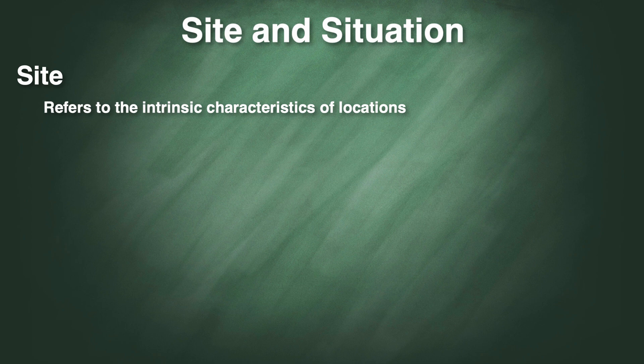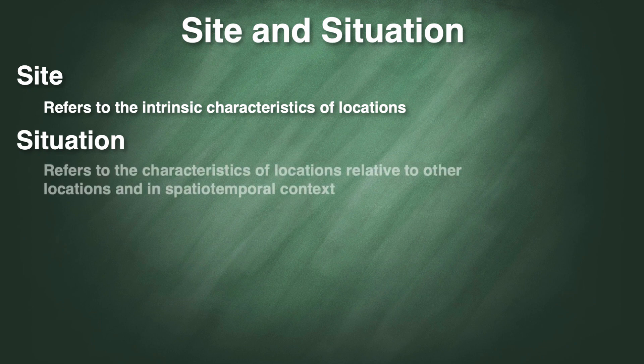In contrast, situation refers to the characteristics of a place relative to something else. It includes taking context into account, including both spatial and temporal context. A location may be a border region on the edge of an empire. Maybe its position on the coast makes it a natural harbor for certain kinds of ocean-going vessels.